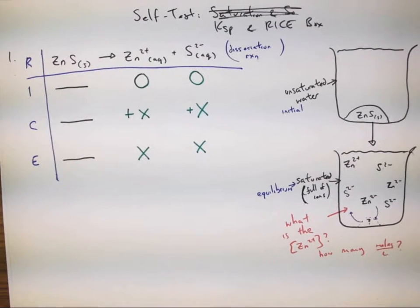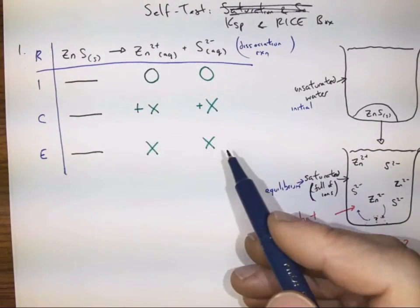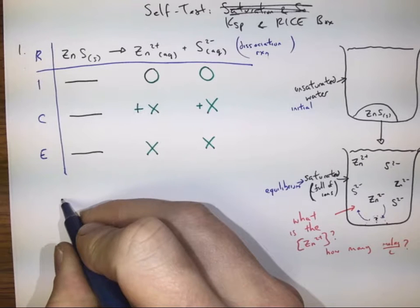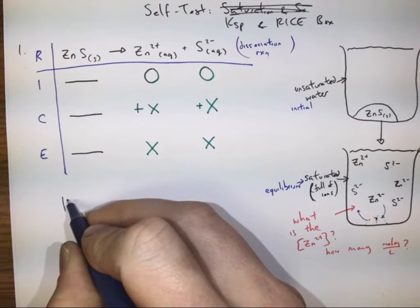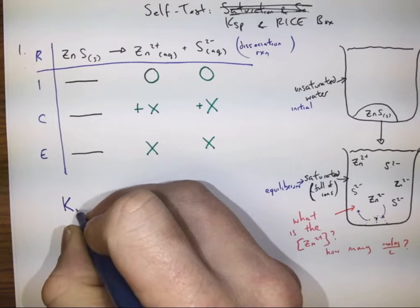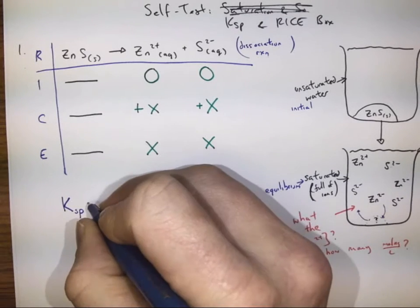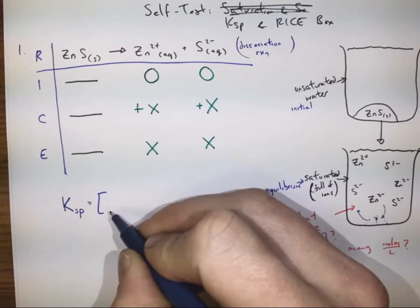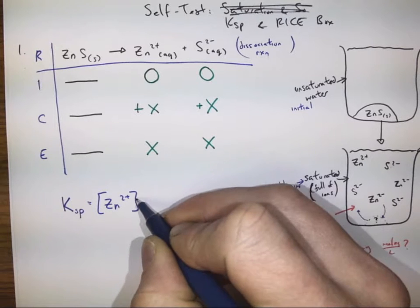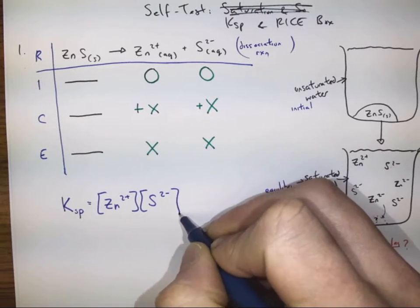Our good standards and practice say that after we draw our rice box, we're probably going to want to go to a KEQ expression. But with solubility, rather than a KEQ, we do a KSP. That's going to be an expression of our zinc ion concentration times our sulfide ion concentration.